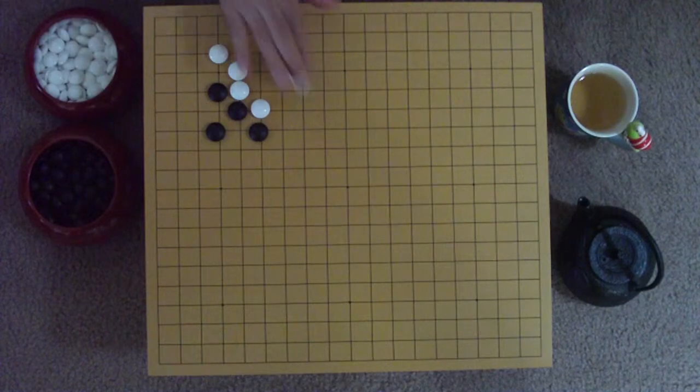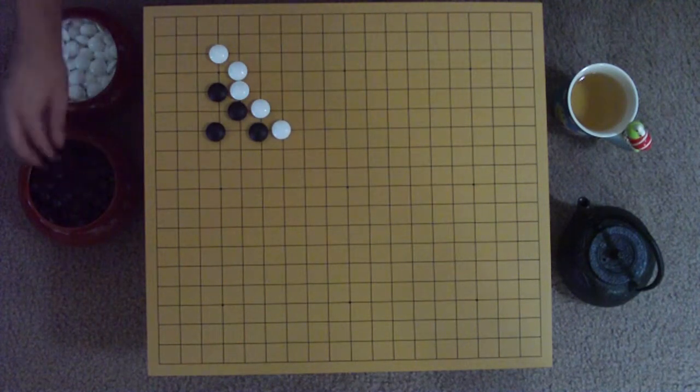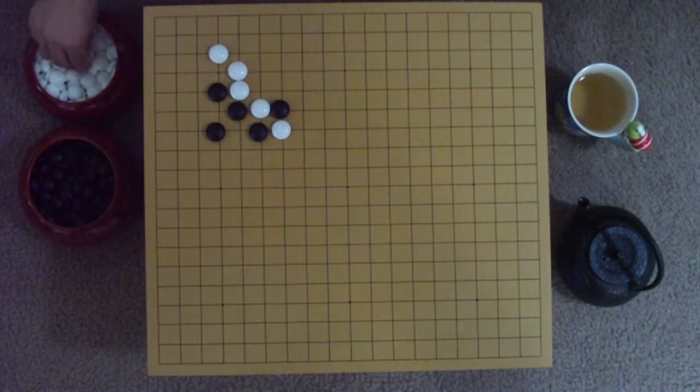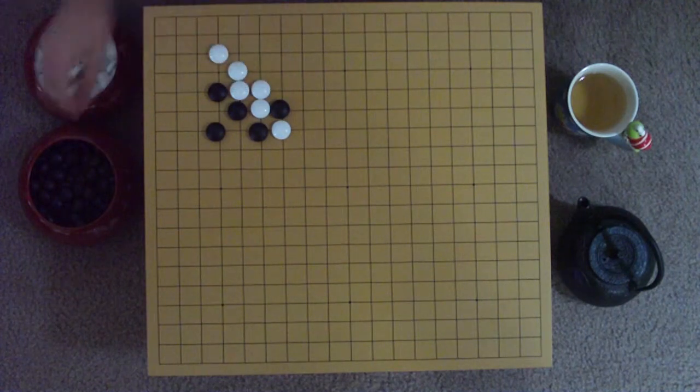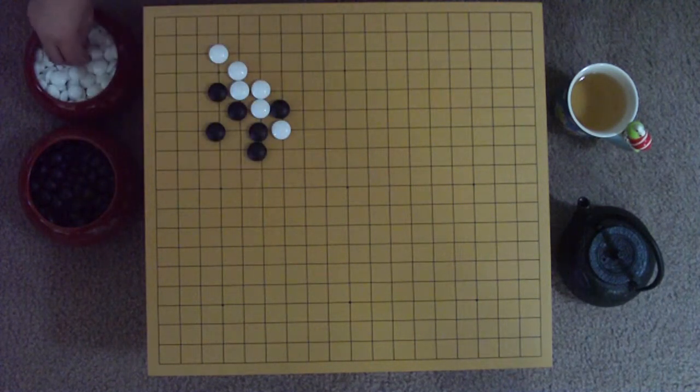This convinces Black to take the bait. If we follow the most common responses, both White and Black end with larger territories than before.